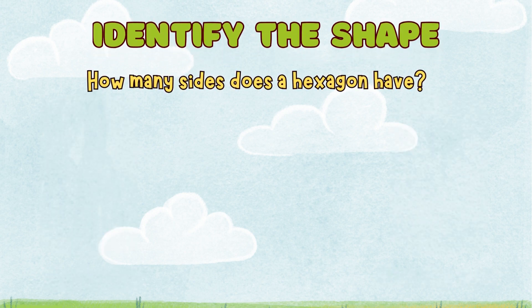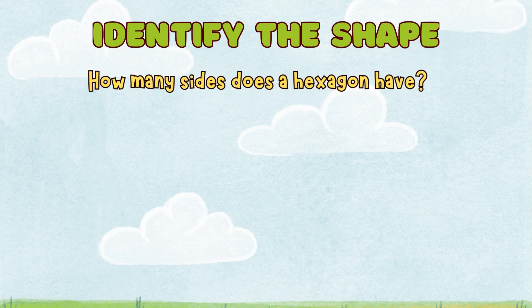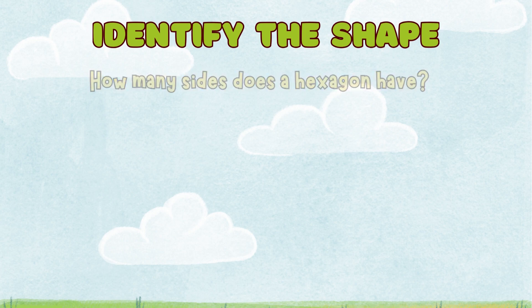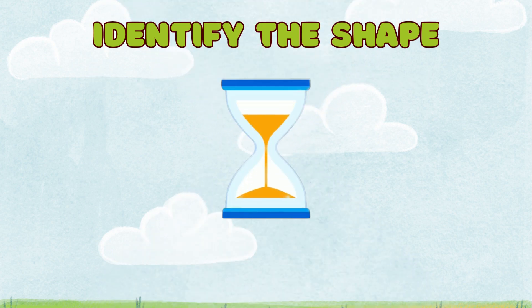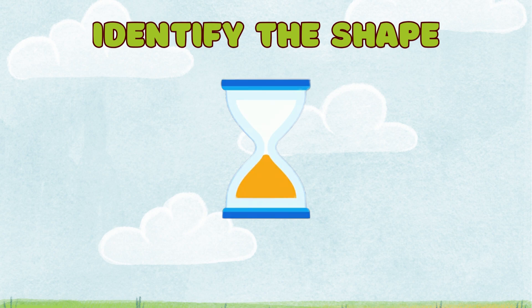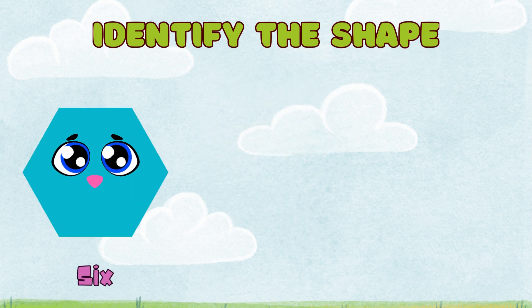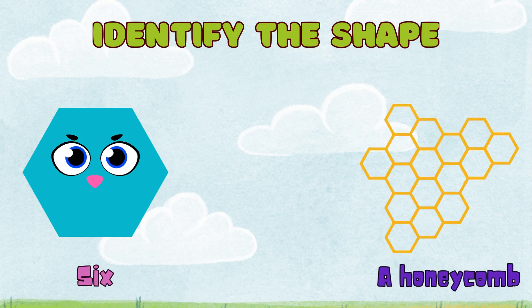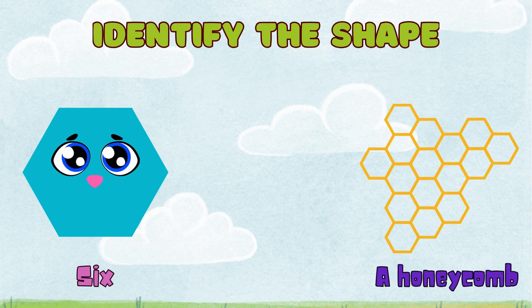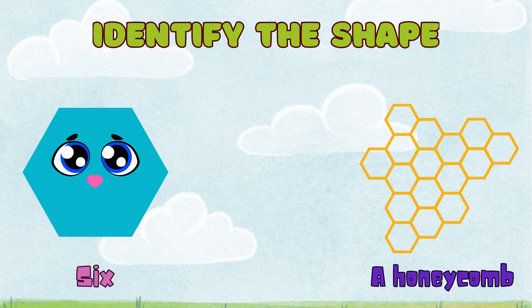How many sides does a hexagon have? The answer is six. A hexagon has six sides. The shape of a honeycomb is hexagonal.